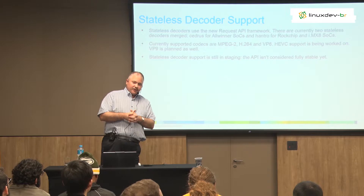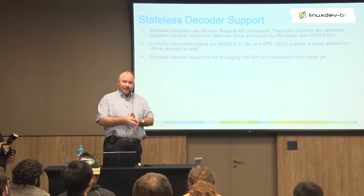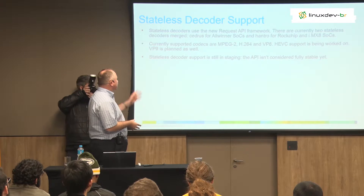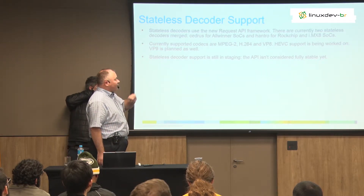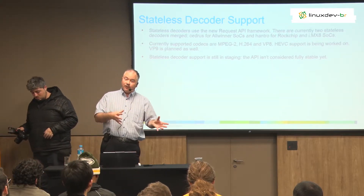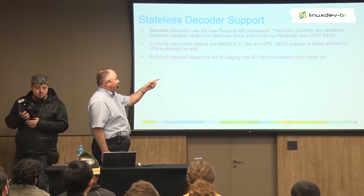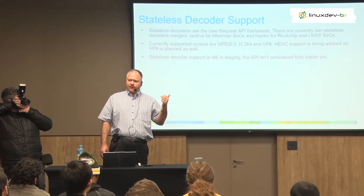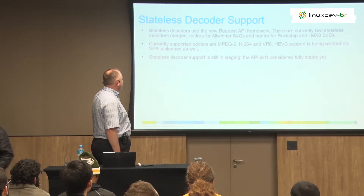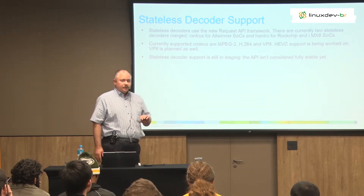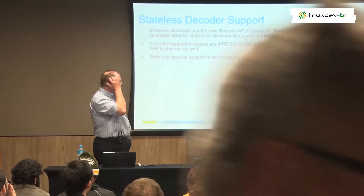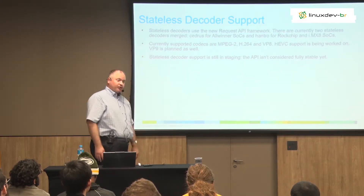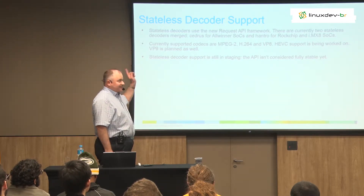The request API framework was the main blocker — that's now in, came in at the beginning of this year or end of last year. Now we have two stateless drivers: the Cedrus driver for Allwinner SoCs, and the Hantro driver — it's an IP that different SoC vendors have bought, so we have implementations for Rockchip and i.MX8 Freescale SoCs. The codecs we support at the moment are MPEG-2, H.264, and VP8. HEVC support, aka H.265, is being worked on — patches are floating around. VP9 is planned but I haven't seen any patches yet.